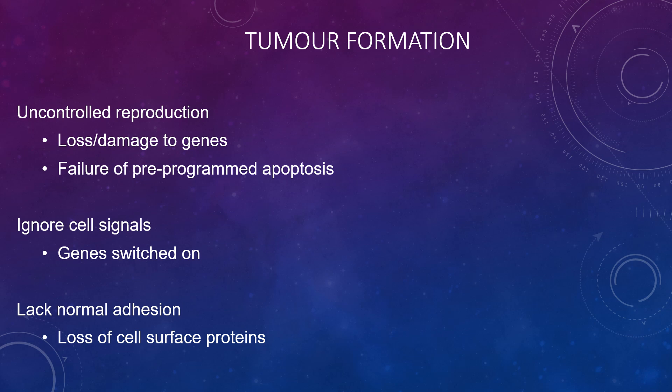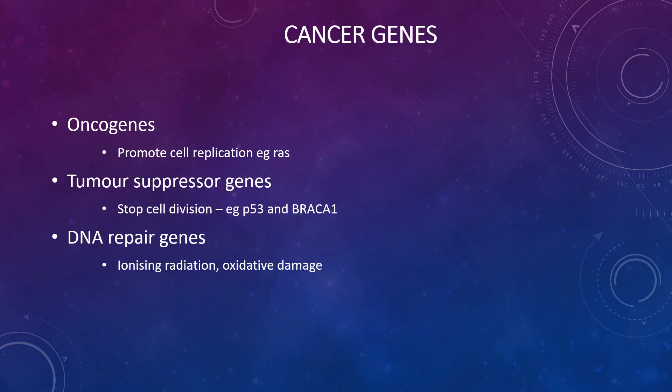In tumour formation specifically, there is uncontrolled reproduction, loss of or damage to genes, failure of pre-programmed apoptosis (cell death), cell signals are ignored, genes are switched on inappropriately, and there is a lack of normal adhesion — which is a loss of cell surface proteins.